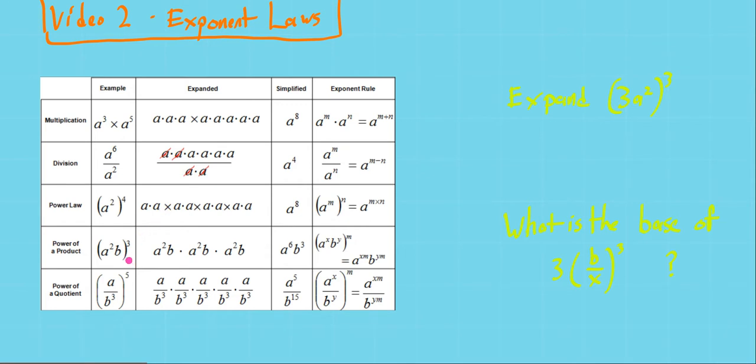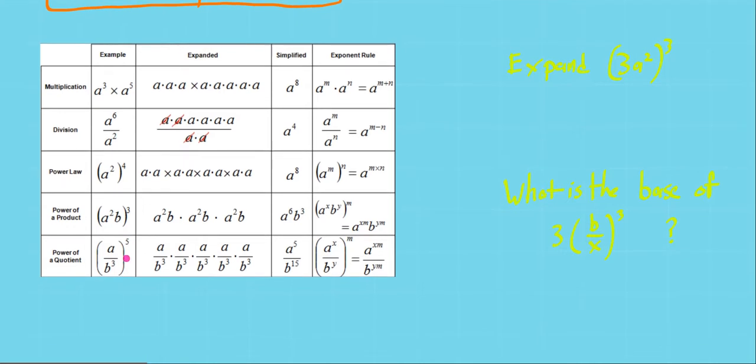Power of a product goes by some different names, but here we're basically using the distributive property. So a squared b is the whole base, right? That whole thing is the base. And if this whole thing is the base, there's 1, 2, 3 of them, if we cube it.